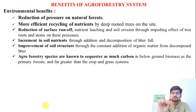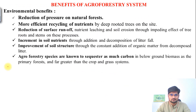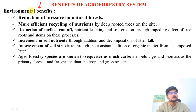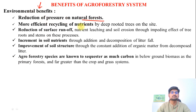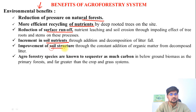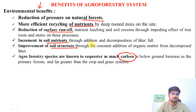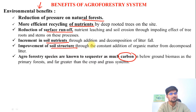The benefits of the agroforestry system, starting with environmental benefits — which is what we are looking into in biogeography and environmental geography — include reduction of pressure on natural forests, nutrient recycling, reducing surface runoff, increasing soil nutrients, improving soil structure, as well as sequestering carbon. Those are the important environmental benefits of agroforestry.